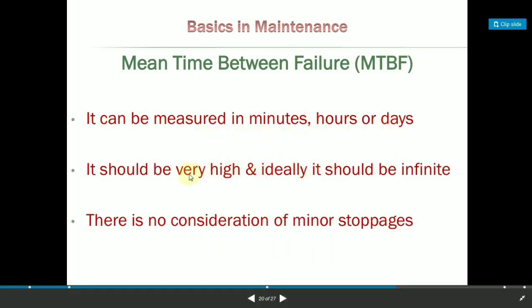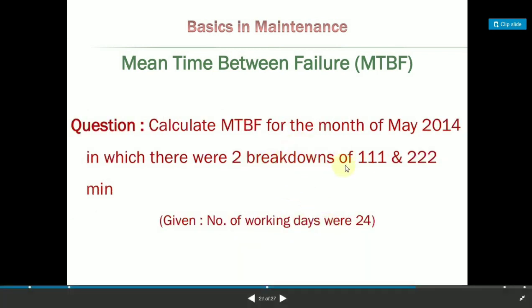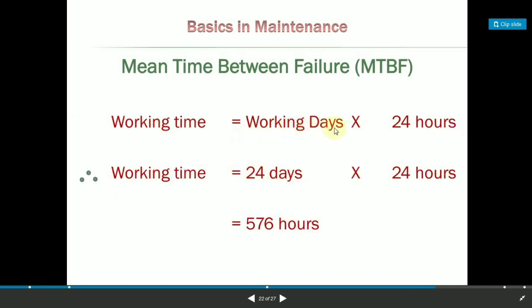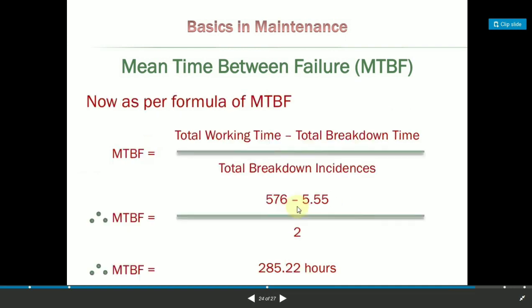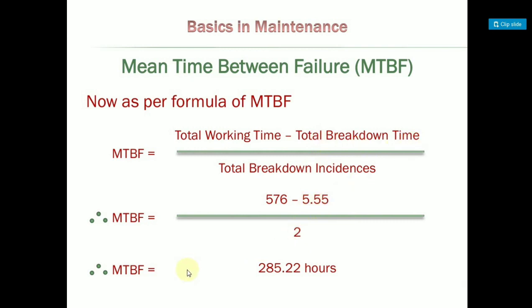MTBF — mean time between failures — can be measured in minutes, hours, or days, and it should be very high; ideally it should be infinite. There is no consideration for minor stoppages in this metric. For example, if the number of working hours is 24 hours and the total breakdown time is 119 plus 28 minutes (or approximately 5 hours) with two incidents, then the mean time between failures is calculated from the available uptime divided by the number of breakdowns.